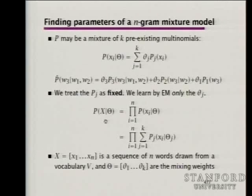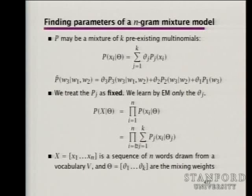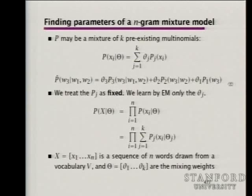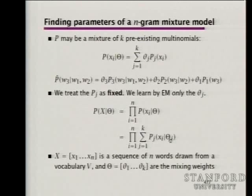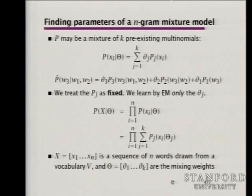For the problem here, the trigram, bigram, and unigram models are completely fixed — we only want to assign the theta weights that combine them together, so we really only have two free parameters in this baby example. When we have the entire data set X, the likelihood of the data given our parameters will be the product over predicting each word, worked out as a sum over our different component models weighted by theta. When you see a product over a sum, that's the classic place where you always end up using the EM algorithm.